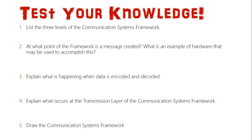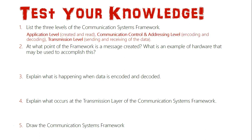The first question: list the three levels of the communication systems framework. They are: the application level, where the message is both created and read; the communication control and addressing level, where the message is encoded before transmission and decoded after transmission; and the transmission level, where the actual data is sent between the transmitter and the receiver.